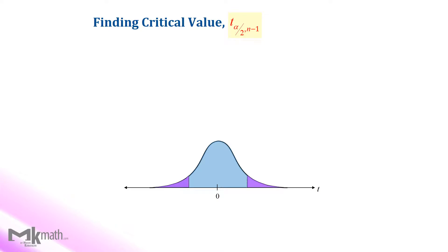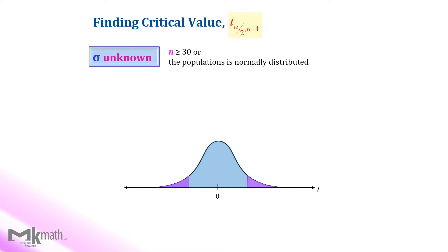There are two steps to find t-critical values for confidence intervals. Before starting, check to see if the population standard deviation sigma is given or not. Also check the second condition: either the sample size is greater than or equal to 30, or the population is normally distributed.